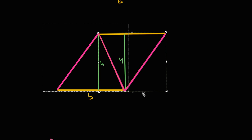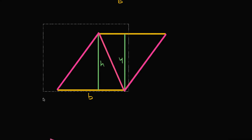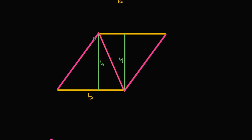I have now constructed a parallelogram that has twice the area of our original triangle, because I have two of our original triangles right over here. I copied and pasted it, then flipped it over, and constructed the parallelogram. The area of the entire parallelogram is going to be the length of this base times this height — base times height.